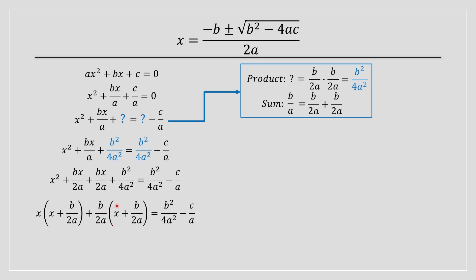And you're going to notice, is that x plus b divided by 2a squared. So what we did is we converted the square trinomial into a perfect square binomial.